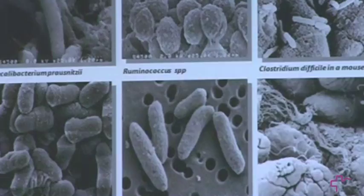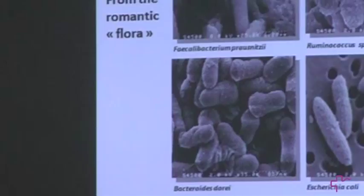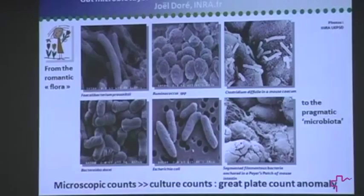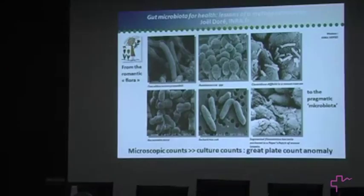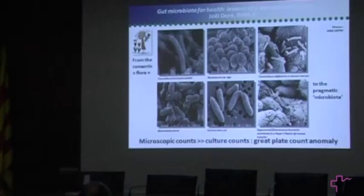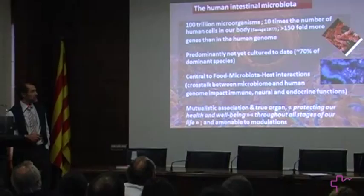We learned a lot on the gut microbiota using culture techniques, isolating a number of bacterial strains. But we know now very precisely that if you look at the microscope at any human gut content, you will see many more microbes than you will be able to culture in the laboratory. This was called the great plate count anomaly, telling us that culture is really biased and will never give a complete representation of what is truly present in the gut. That led us to use molecular technologies to assess the microbiota.